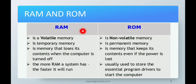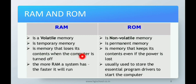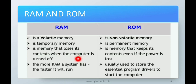The difference between RAM and ROM: RAM is Random Access Memory; ROM is Read Only Memory. RAM is volatile in nature; ROM is non-volatile. RAM is temporary memory; ROM is permanent memory. Data in RAM is lost when the computer is turned off, while ROM keeps its content even if the power is lost. The more RAM a system has, the faster it will run — similar to mobile phones where clearing RAM speeds up performance. ROM is usually used to store essential program drivers to start the computer.